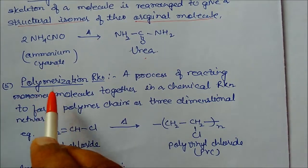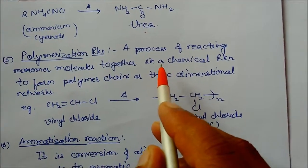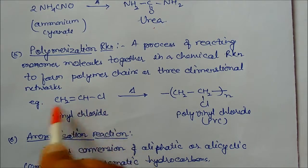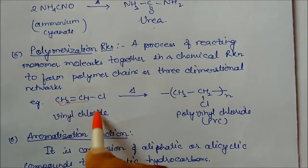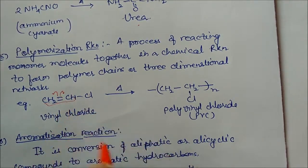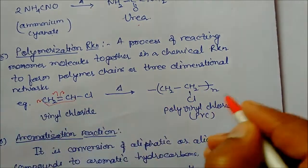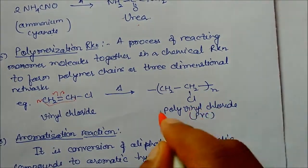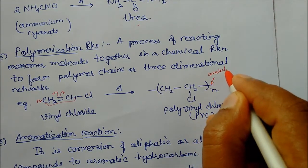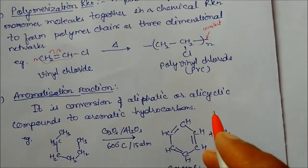Next is polymerization reaction, a process in which reactive monomer molecules combine together in a chemical reaction to form polymer chains or three-dimensional networks. For example, vinyl chloride (a vinyl compound with chlorine) on heating: the pi bond breaks open, and N number of vinyl chloride molecules join together connected by covalent bonds. This gives PVC (polyvinyl chloride), which we have already studied.